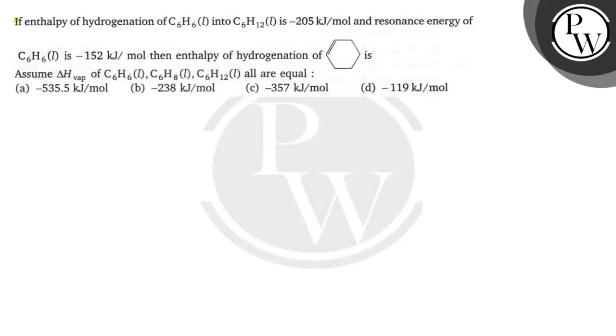Hello Bacho, let us see this question. If enthalpy of hydrogenation of C6H6 benzene liquid into C6H12 cyclohexane liquid is minus 205 kilojoules per mole and resonance energy of benzene liquid is minus 152 kilojoules per mole, then enthalpy of hydrogenation of cyclohexane is. Assume that delta H vaporization of benzene C6H6 liquid, C6H8, and C6H12 cyclohexane all are equal.